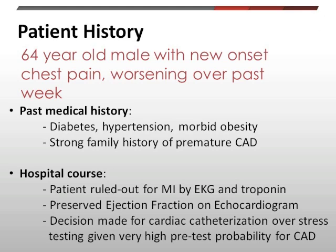The case we're going to discuss today is that of a 64-year-old male with new-onset chest pain, worsening over the past week. He has a significant medical history of diabetes, hypertension, is morbidly obese, and also has a strong family history of premature CAD. He was admitted to the hospital, ruled out for an acute MI by EKG and troponin, and had an echocardiogram done which indicated a preserved ejection fraction. At that time, the decision was made to admit him for a cardiac catheterization over stress testing given his very high pre-test probability of CAD.